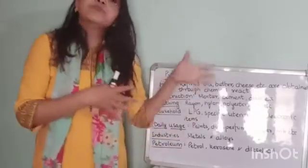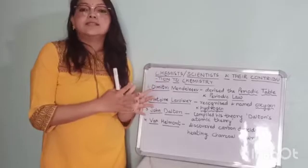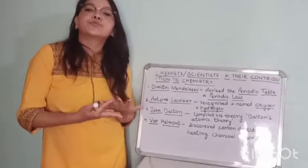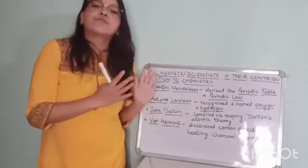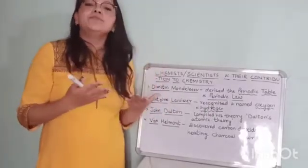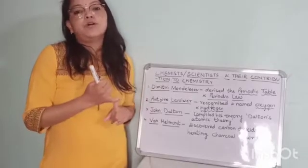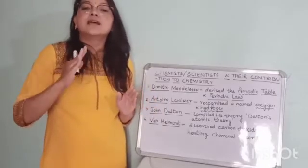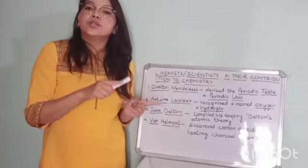This is how all different types of products are obtained. Now let's talk about chemists and scientists and their contributions to chemistry. The first one is Dmitri Mendeleev — he was a Russian scientist, born in 1834, and he devised the periodic table of elements, which is a table in which elements are arranged in a systematic way. He also discovered the periodic law.